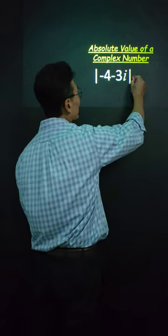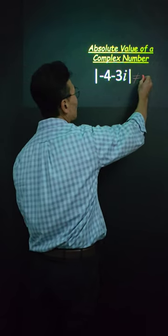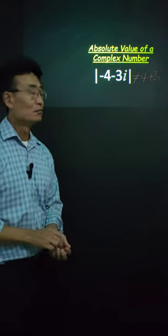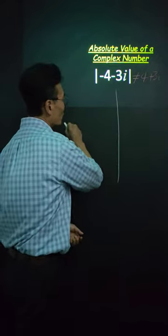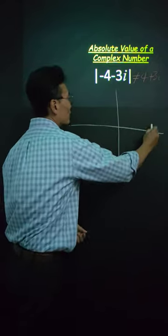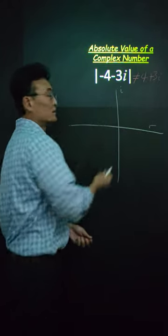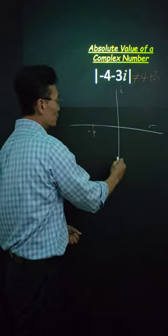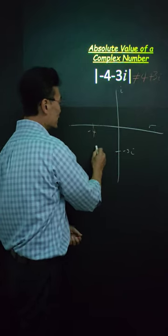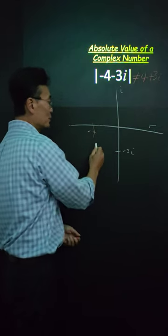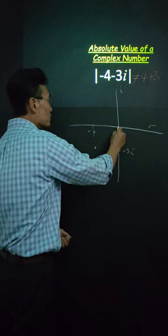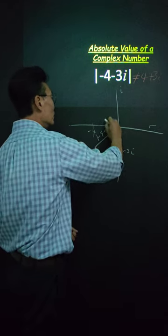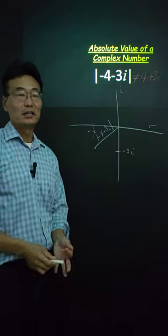The absolute value of negative 4 minus 3i is not 4 plus 3i. What it is: on the complex plane, with the real axis and the imaginary axis, if we draw the point at negative 4 and negative 3i, the distance from the origin to that point is the absolute value of negative 4 minus 3i.